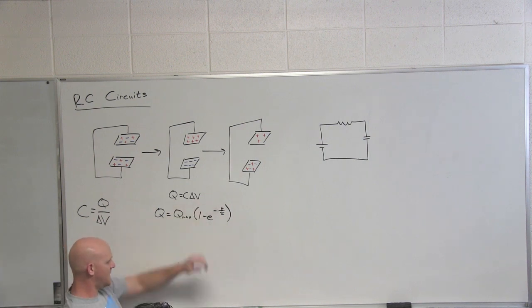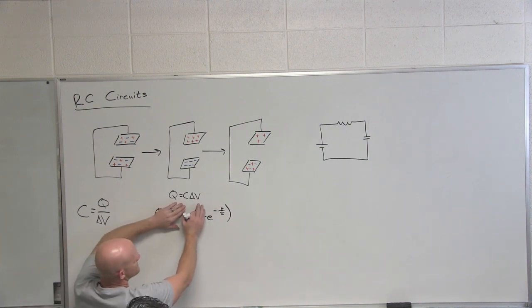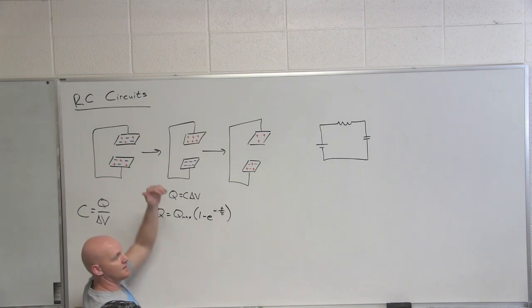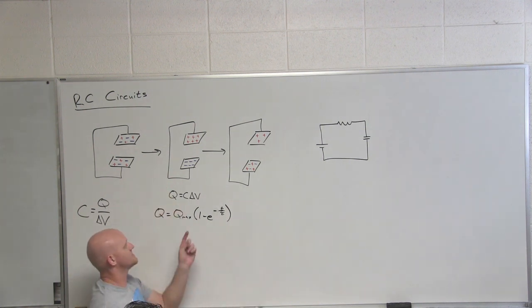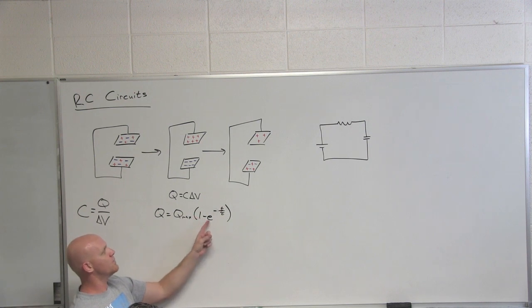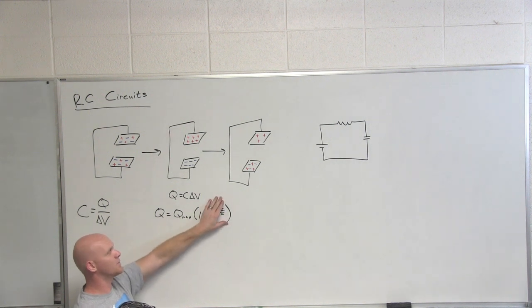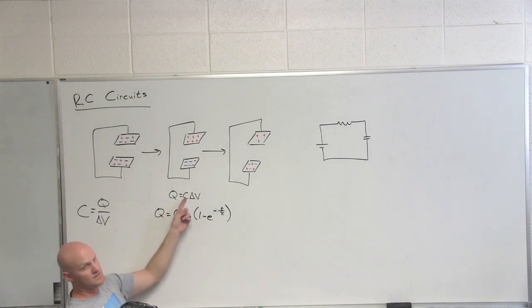So if we look at just an exponential for a second, what does an E to the negative equation do as T time grows? Goes exponential to K. So here, our equation's not going to exponential to K. What we're subtracting from 1 is going down to 0. And so at huge amounts of time, this whole term goes away, and what are you going to be left with? Q max times 1, which is Q max.